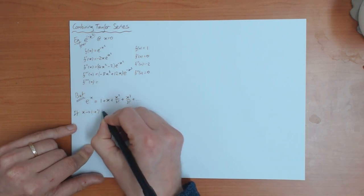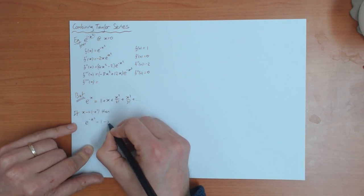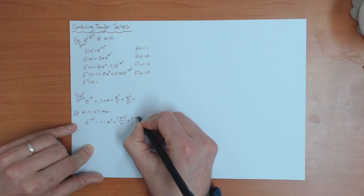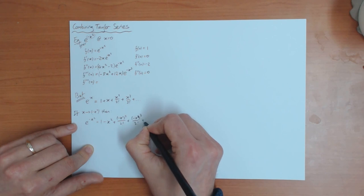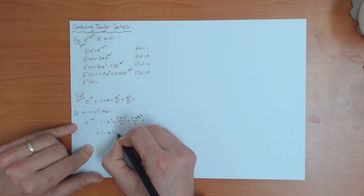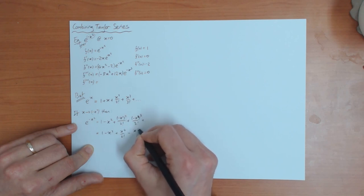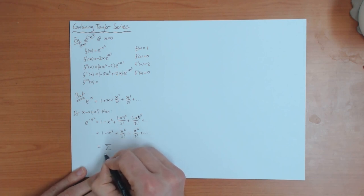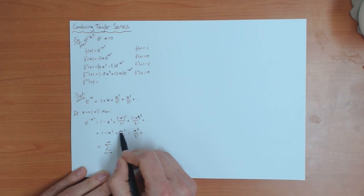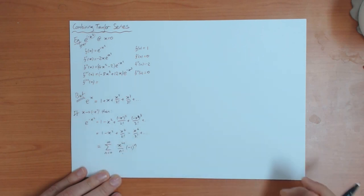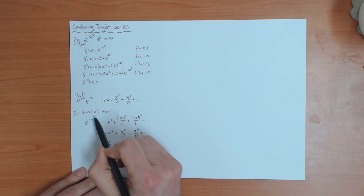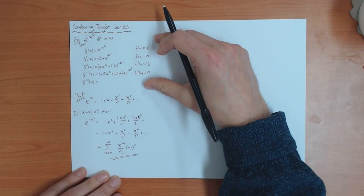If x goes to minus x squared, then you get e to the minus x squared is equal to 1 minus x squared plus x squared squared over 2 factorial plus minus x squared cubed over 3 factorial and so on. This simplifies to 1 minus x squared plus x to the 4 over 2 factorial minus x to the 6 over 3 factorial. So the infinite sum has only even powers of x: it's the sum of minus 1 to the n times x to the 2n divided by n factorial. This is obviously much faster than using the definition.